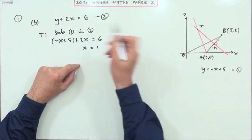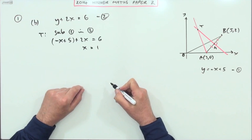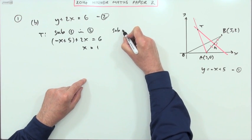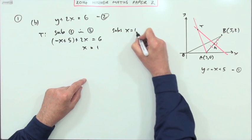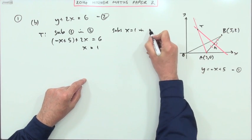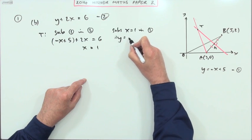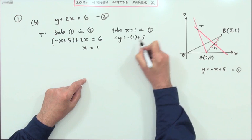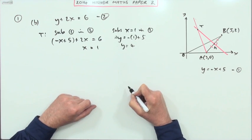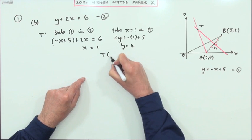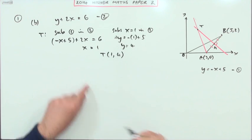And that 5 goes across and makes it 1—minus 5, so x = 1. And then what's y? Well, if I substitute x = 1 into equation 1, I'll have y = -1 + 5, so y = 4. So T is the point (1, 4).